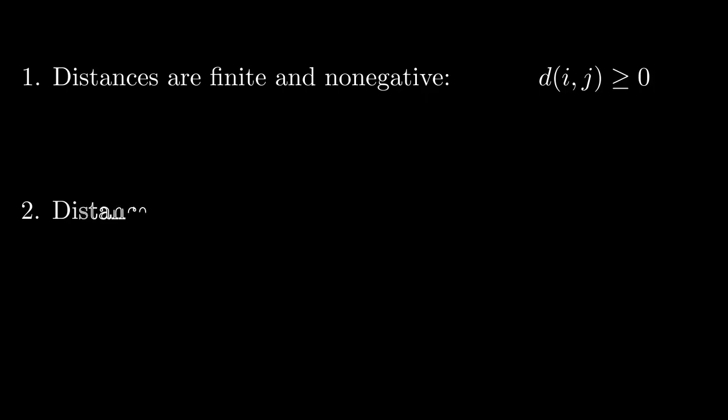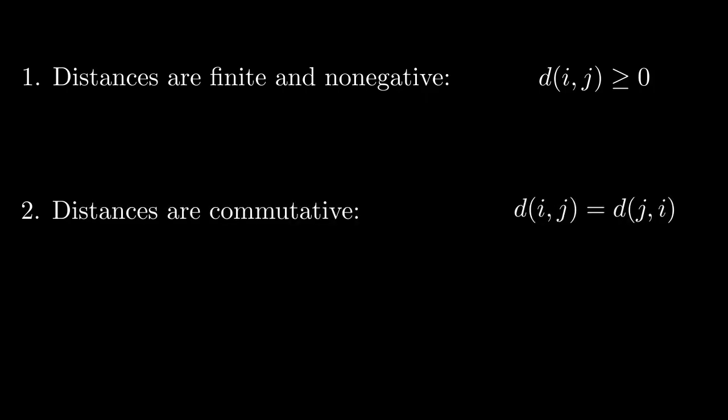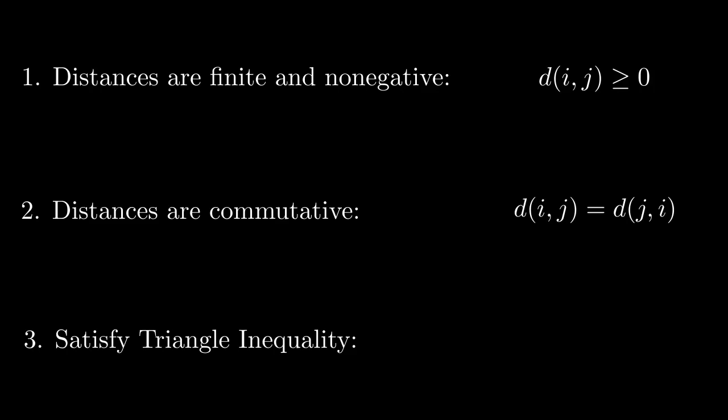Second, all distances are commutative — the distance between node i and node j has to be the same as the distance from node j to node i. And third, all distances shown on the graph have to satisfy the triangle inequality. Although this may seem rather constrictive, most examples of the travelling salesman problem are metric by default, including the example we showed before.